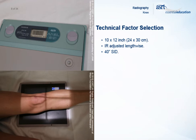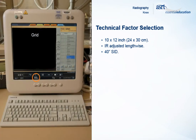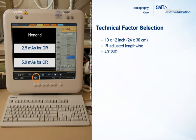Knee examinations can be performed with or without a grid depending on the thickness of the knee, departmental protocol, and the physician's preference. 85 kVp is a common setting for AP projections performed with a grid. Automatic exposure control may be used to achieve proper mAs setting; however, common mAs settings are 2.5 mAs when using digital radiography and 5 mAs when using computed radiography. When a grid is not used, kVp is commonly set to 70 and the mAs settings remain the same. A small focal spot is selected.